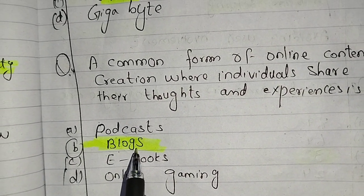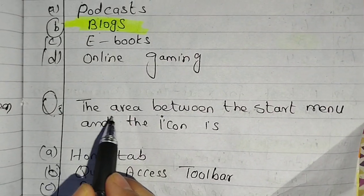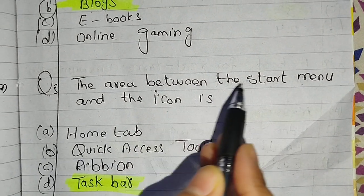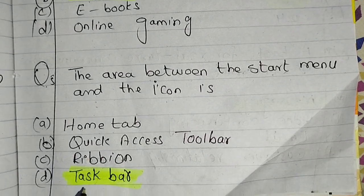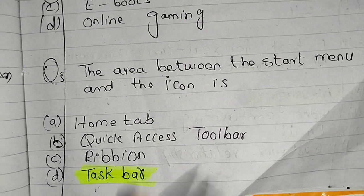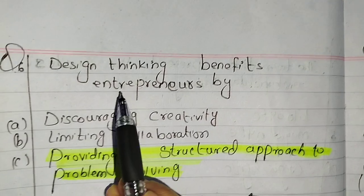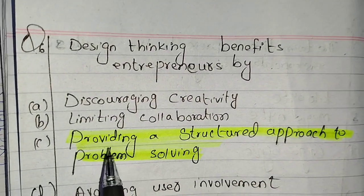Next MCQ: The area between start menu and icon. You have a taskbar. Design thinking benefits entrepreneurs by providing structure and approach to problem solving.